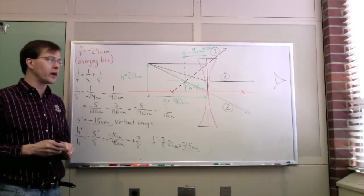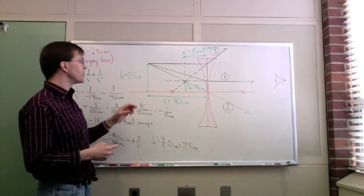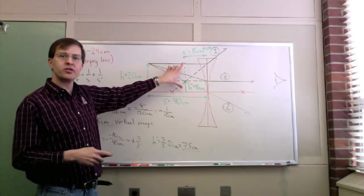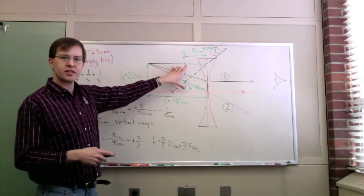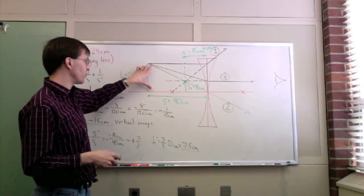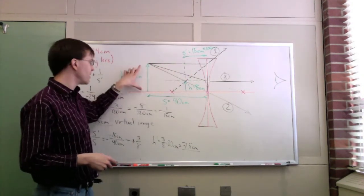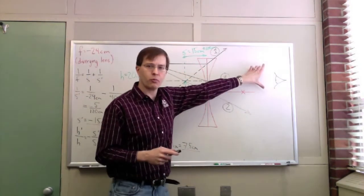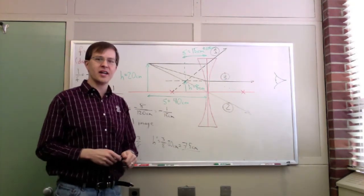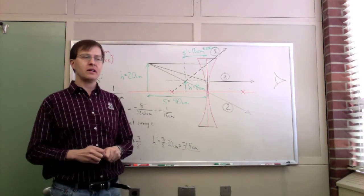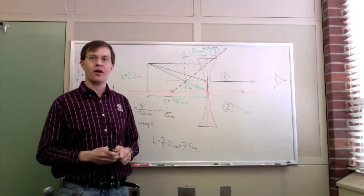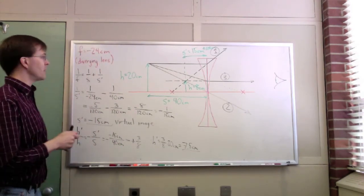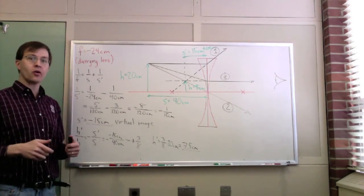One interesting note: unlike a converging lens, there's no special change in image type when you move the object across a diverging lens's focal point. With a converging lens, crossing the focal point switches between real and virtual images. For a diverging lens, there's no such transition — the only meaningful change would be a virtual object on the other side of the lens, which doesn't come up in introductory physics. With that, we've completed the diverging lens example and covered everything our class needs for this topic.